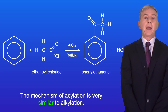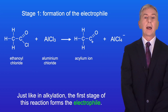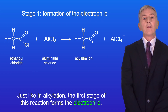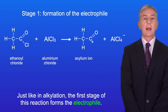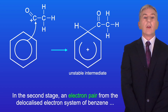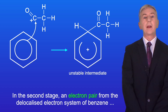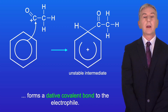The mechanism of acylation is very similar to alkylation. Just like in alkylation, the first stage of this reaction forms the electrophile. In this case the electrophile is called an acylium ion. In the second stage, an electron pair from the delocalized electron system of benzene forms a dative covalent bond to the electrophile.